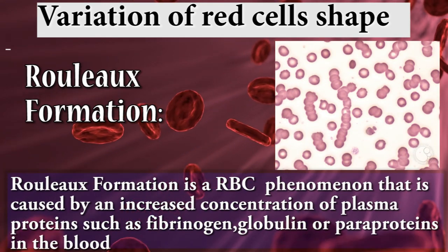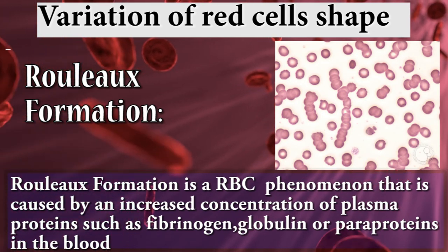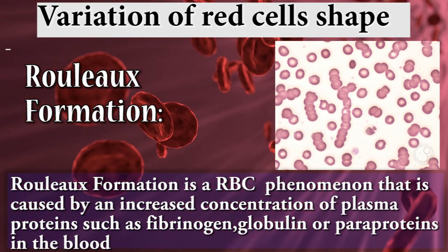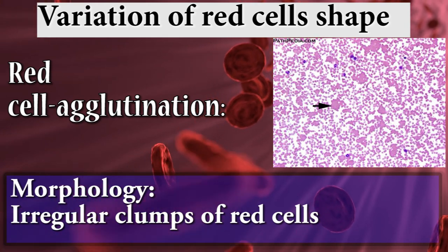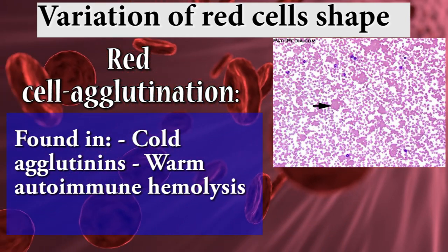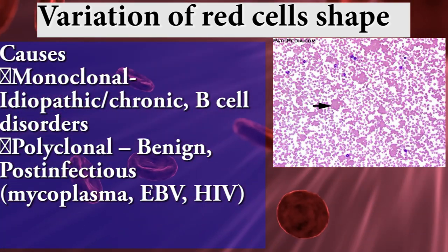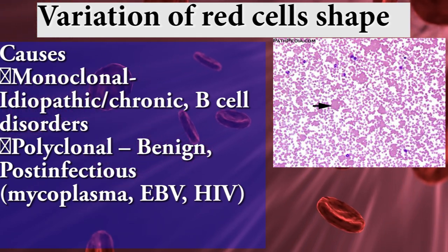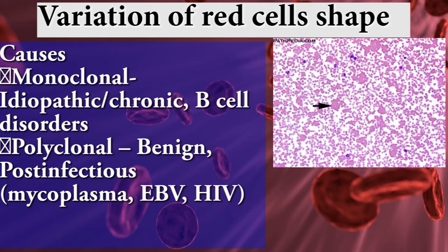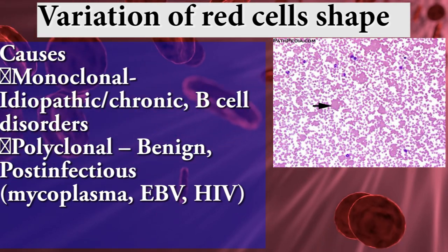Rouleaux formation is a red blood cell phenomenon caused by an increased concentration of plasma proteins such as fibrinogen, globulin, or paraproteins in the blood. Red cell agglutination shows irregular clumps of red cells, found in cold agglutinins. Warm autoimmune hemolysis causes can be monoclonal — meaning idiopathic or chronic B-cell disorders — or polyclonal, meaning benign or post-infectious. Examples include Mycoplasma, Epstein-Barr virus, and HIV.